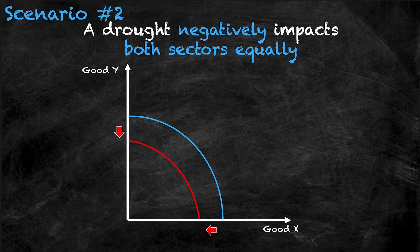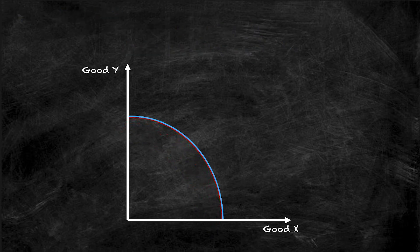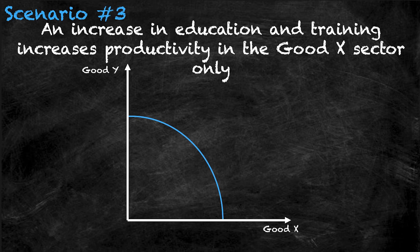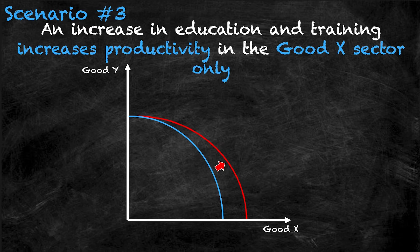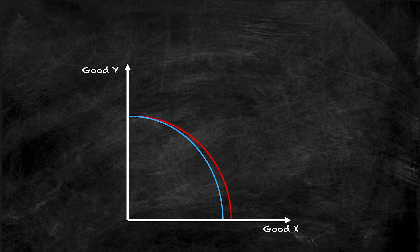Ready for something a little bit more difficult? Let's check out scenario number three. An increase in education and training increases productivity in the good x sector only. We know that an increase in productivity moves the PPF to the right, but it doesn't impact both sectors equally — in fact, the shock does not impact the good y sector at all. The x-intercept moves to the right and the y-intercept doesn't change. In economics this is called a pivot, as only one intercept changes and therefore pivots around the other. The economy can now produce more of good x but cannot change the production of good y, because the shock only affected the good x sector.